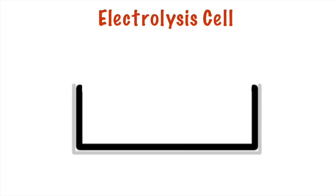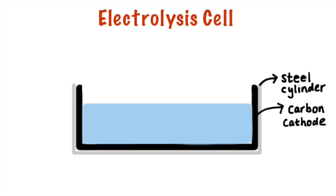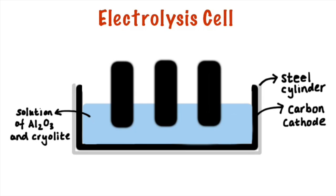The electrolysis cell consists of a steel cylinder which is lined with carbon and that lined carbon makes up the cathode. The solution is a solution of alumina, aluminium oxide dissolved in cryolite to decrease the melting point and we then insert the giant carbon anodes.